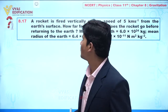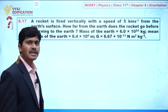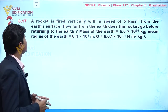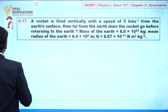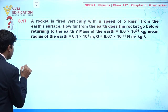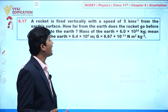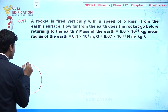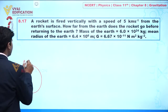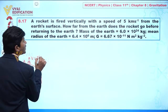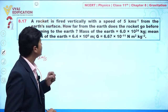We are going to discuss question number 8.17. In this question, a rocket is fired vertically with a speed of 5 kilometers per second from the Earth's surface. I am drawing a diagram — this is the Earth, and we are firing a rocket from the surface. This is the initial position of the rocket. It is given that we are firing vertically with a speed of 5 kilometers per second.